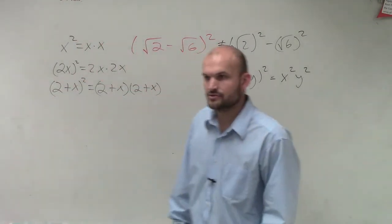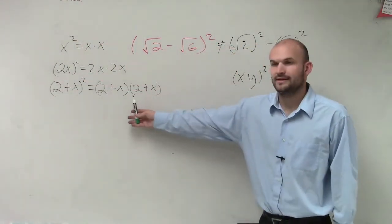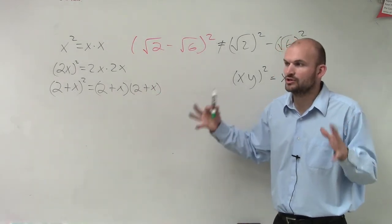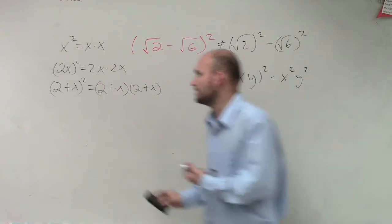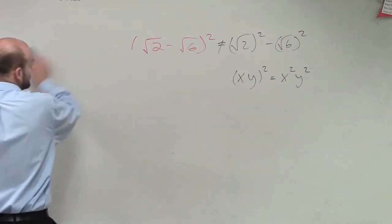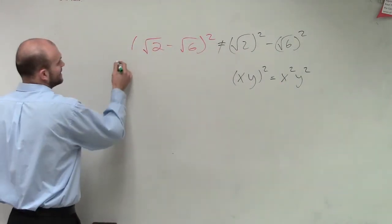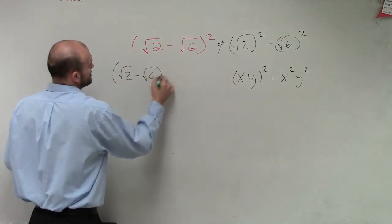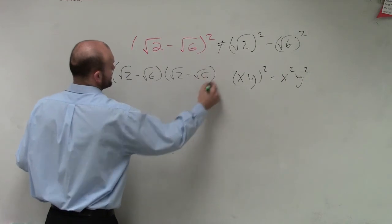So when you have something squared, it's that same term multiplied by the same term. Here we have a binomial multiplied by a binomial. So what this represents is square root of 2 minus the square root of 6 times the square root of 2 minus the square root of 6.